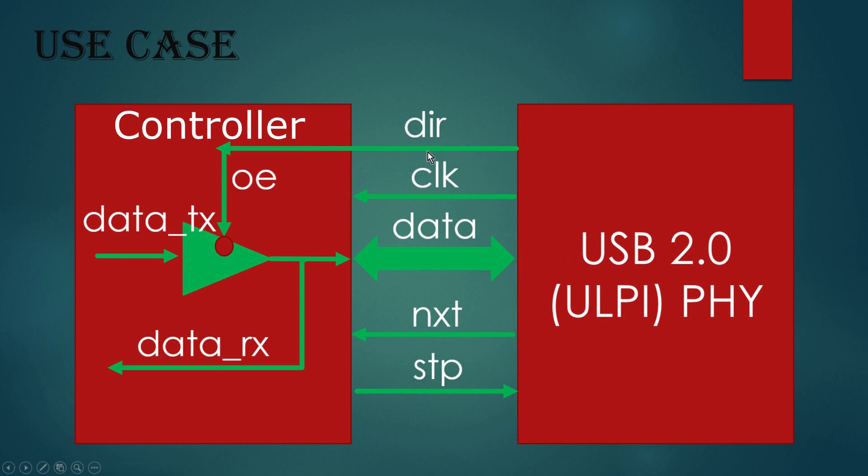Now let us give a bit more attention to this DIR signal. If DIR is high, that means data from PHY to controller is going on. And it needs to be received on DataRx. On the same time, DataTx must be blocked to reach this bi-directional port. So our tri-state buffer does the same for us.